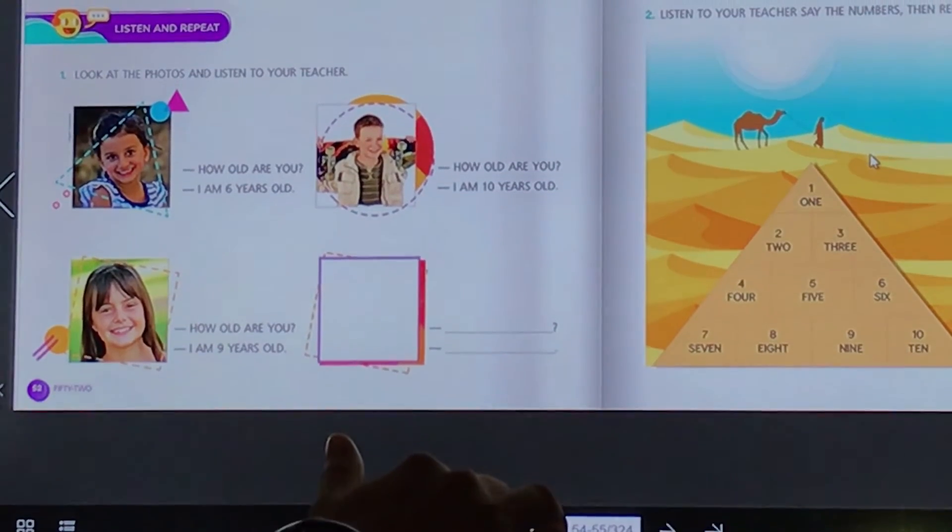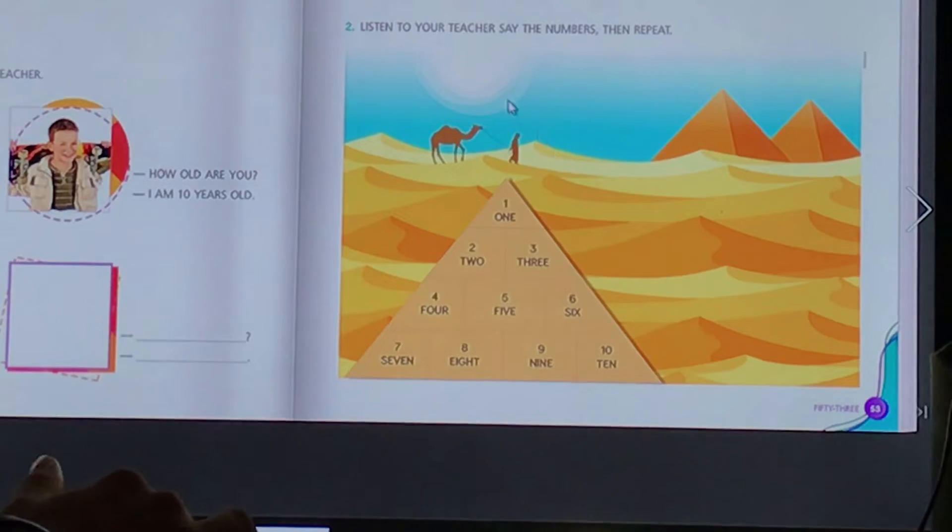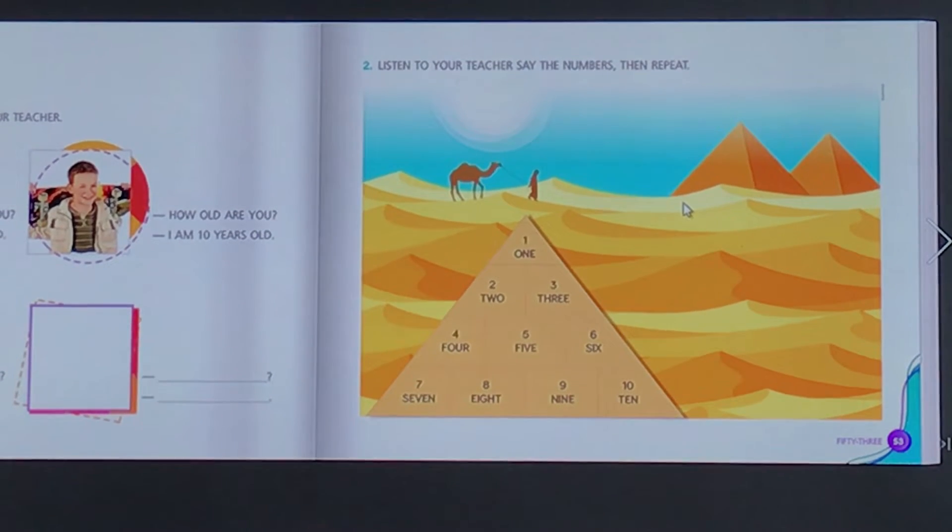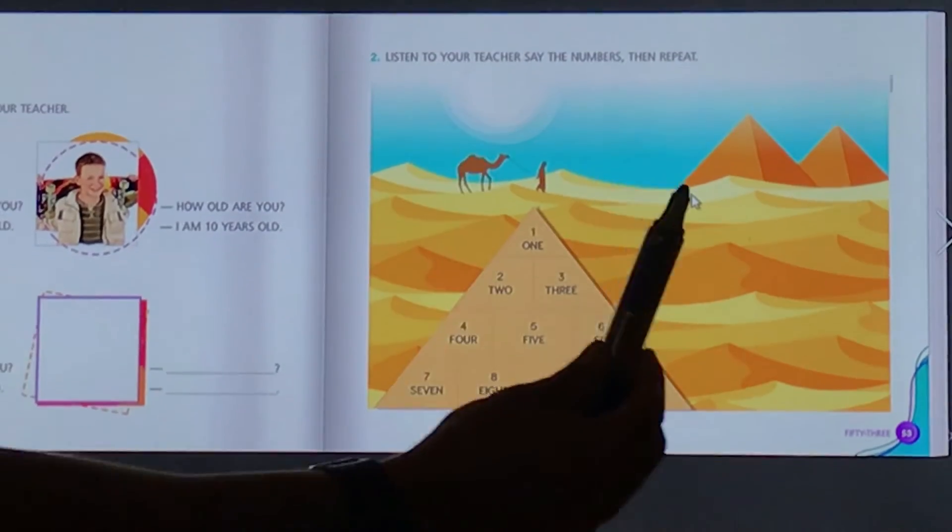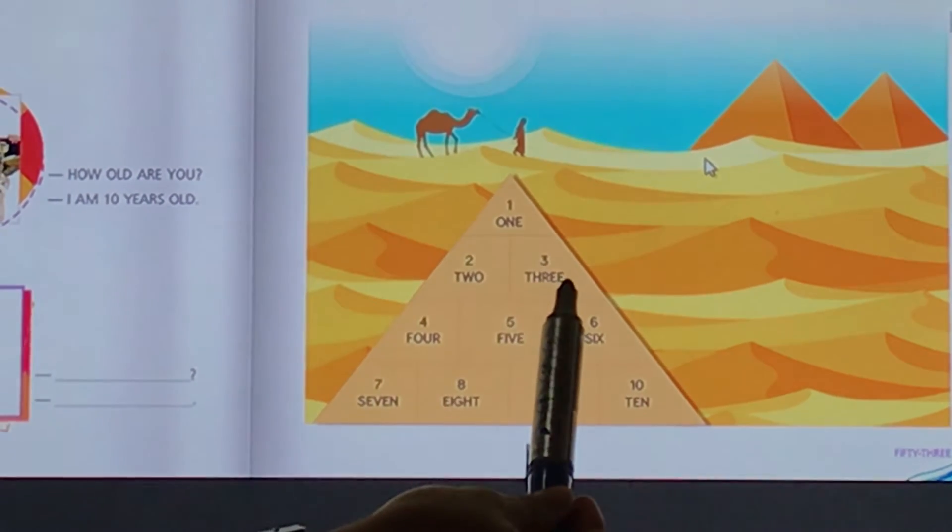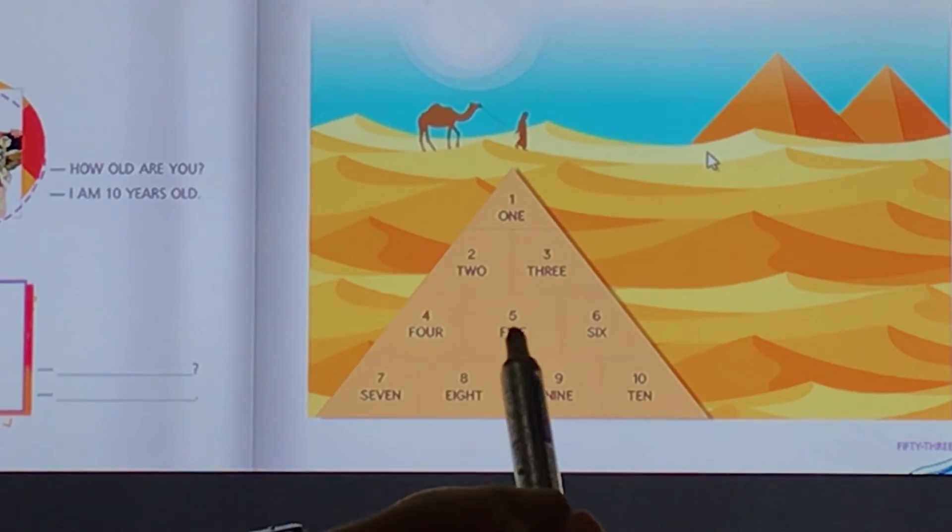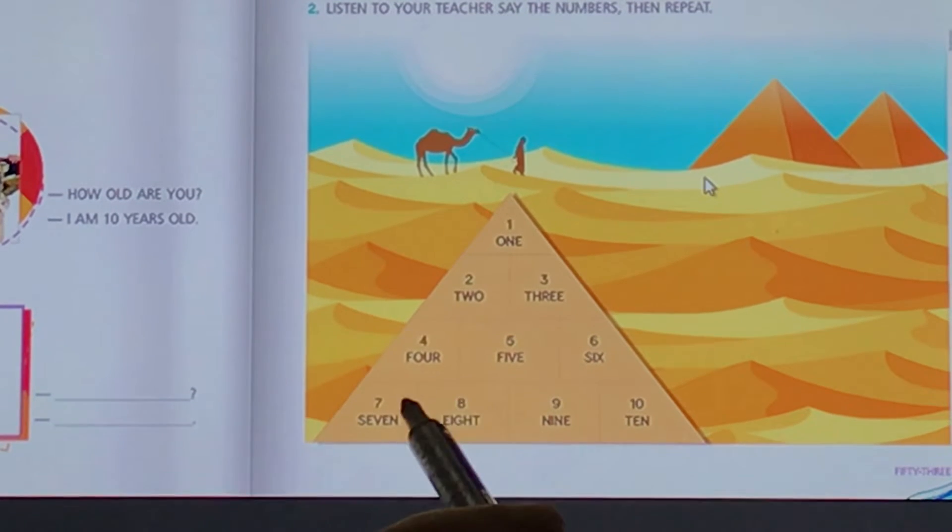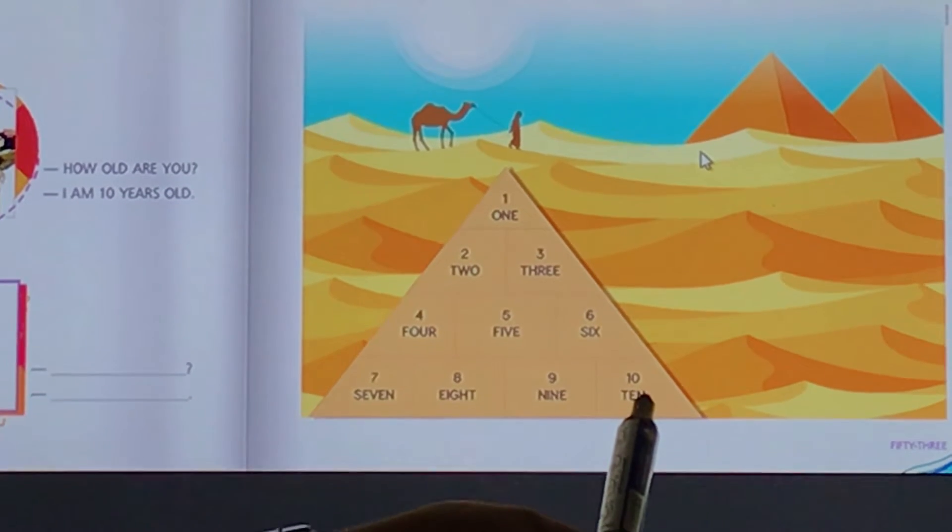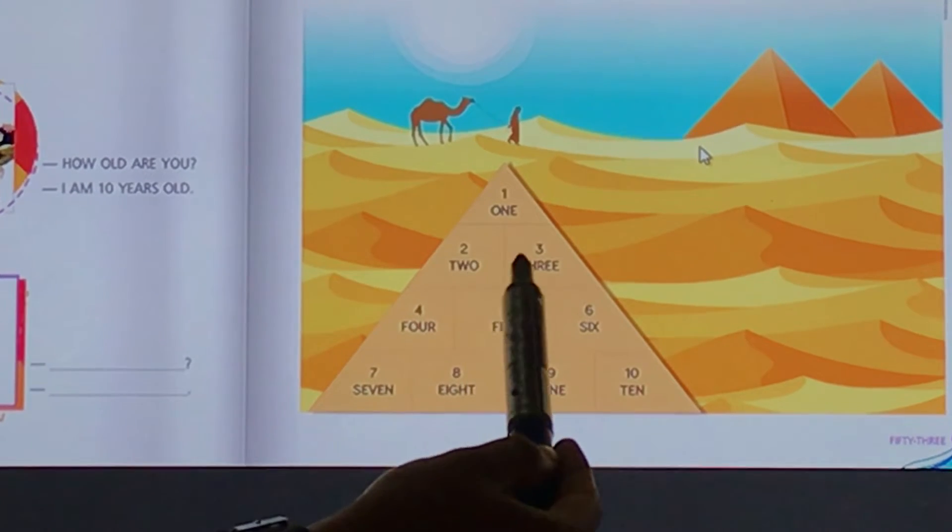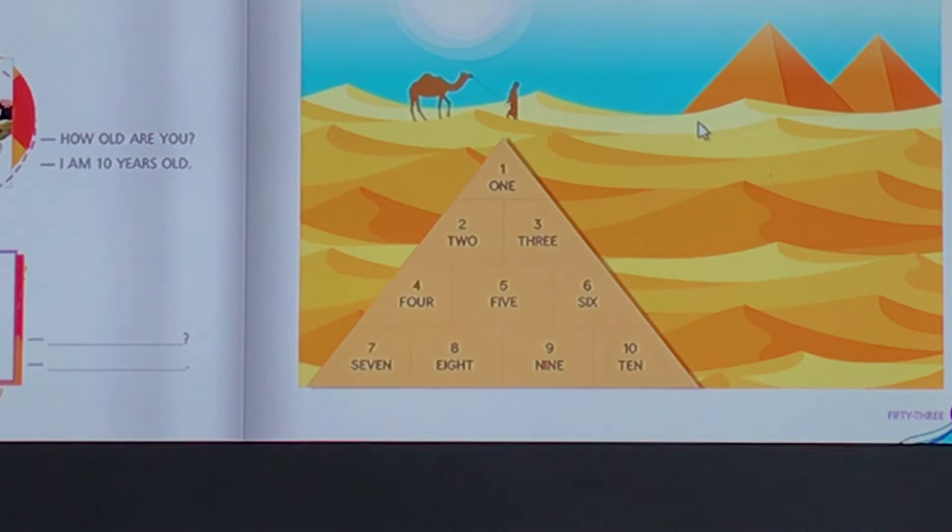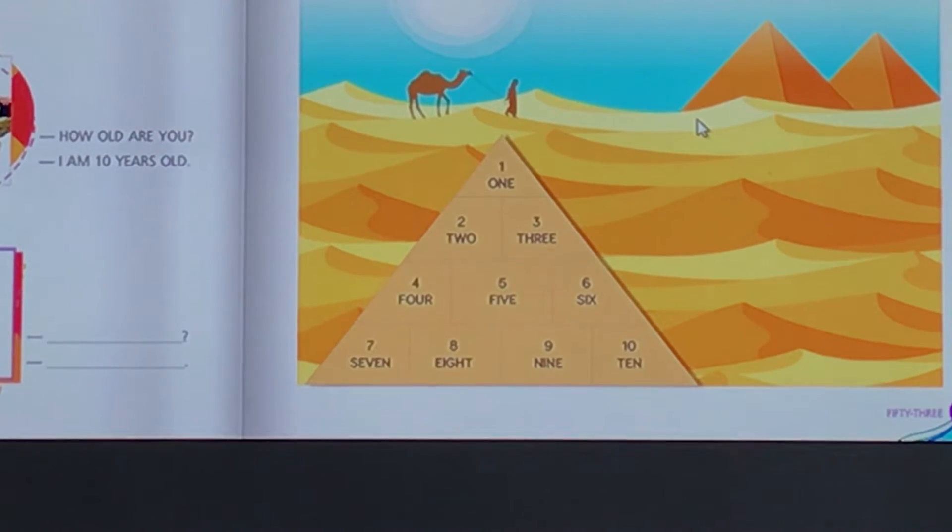Very good. So now let's go to page 53. Listen to your teacher, say the numbers, then repeat. Vocês vão me ouvir e vão me acompanhar. Vamos contar na pirâmide. Let's go. Do topo. One, two, three, four, five, six, seven, eight, nine, ten. Now listen and repeat again. One, two, three, four, five, six, seven, eight, nine, ten. Essa atividade vocês podem repetir ela quantas vezes for necessário.